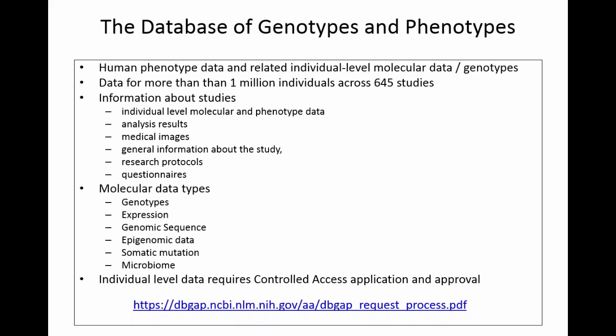dbGaP contains information about the studies: individual-level molecular data, analysis results, medical images, general information about the study, research protocols, and questionnaires. Molecular data types include things like genotypes, expression level, genomic sequence, epigenomic information, somatic mutations, and even human microbiome information.